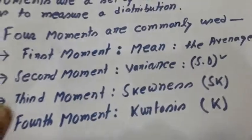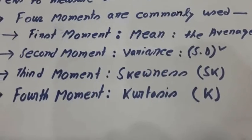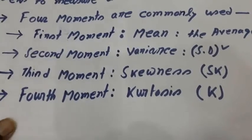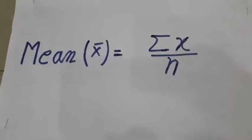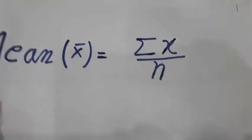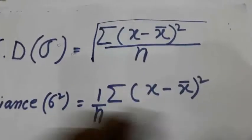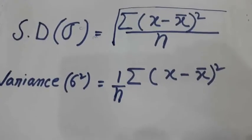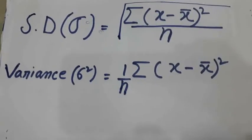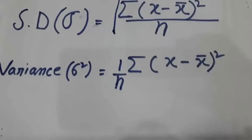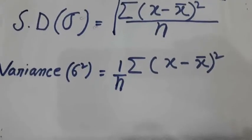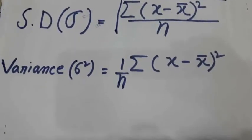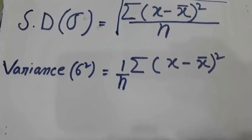And now second moment is the variance. Variance is nothing but the square of the standard deviation. This standard deviation is defined by the root sum x minus x bar whole square divided by n. This x represents the observation and x bar represents the mean or average. And if we make the square of the SD or standard deviation, we will get the variance.